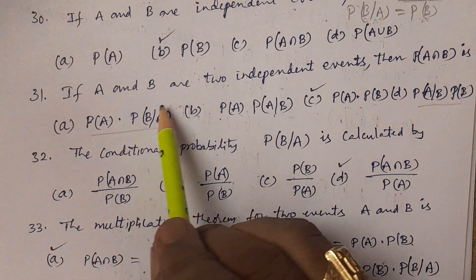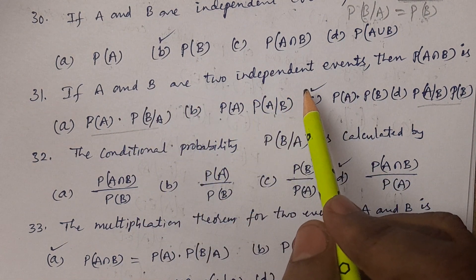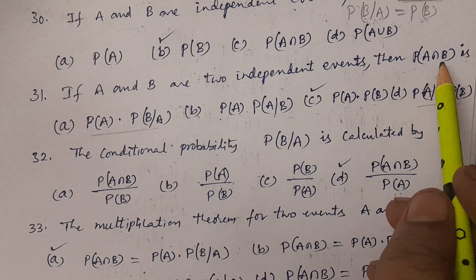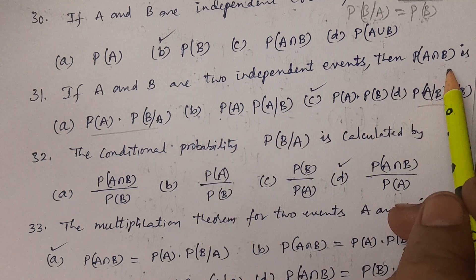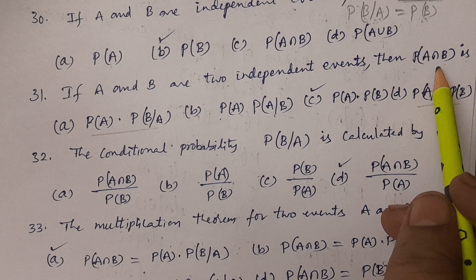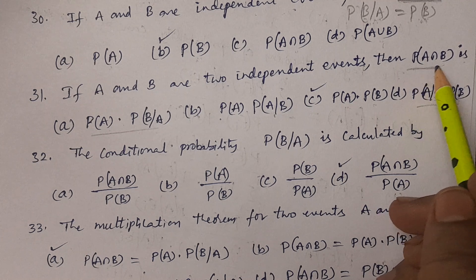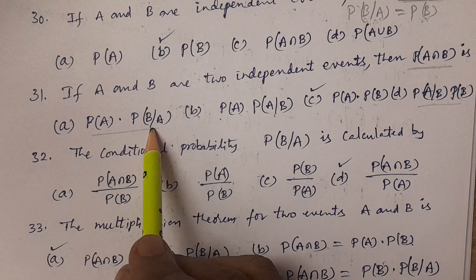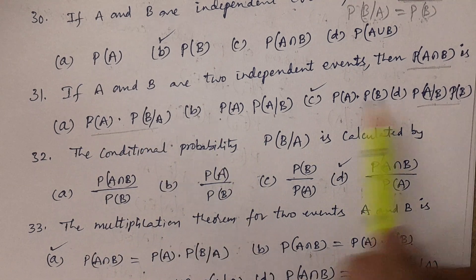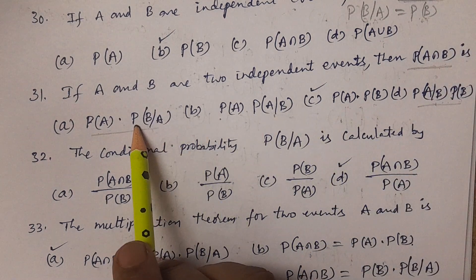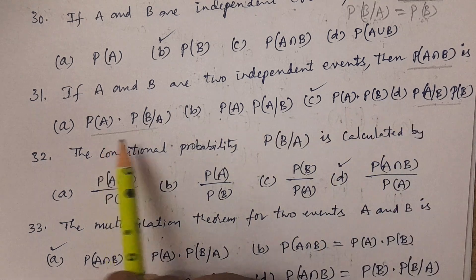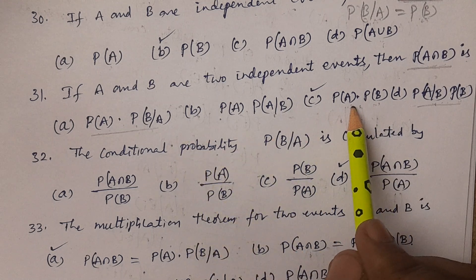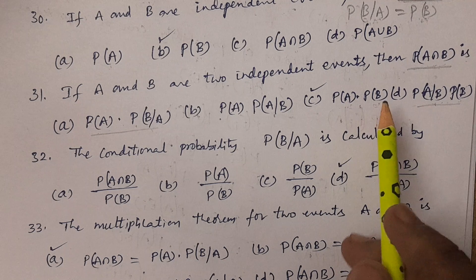If A and B are two independent events, P(A∩B) equals P(A) into P(B). The options also include P(A)·P(B|A) and P(A|B)·P(B) as multiplication theorem forms. The correct answer is option C: P(A)·P(B).